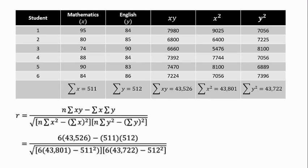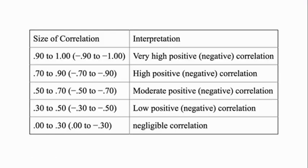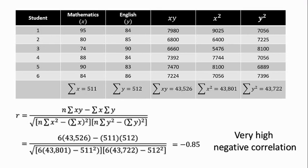We plug in those values into the formula with n equal to 6 because we have 6 students being investigated. You can pause this video to verify how the values were used in the formula. This gives a computed value for R equal to negative 0.85, which according to the table presented, signifies a very high negative correlation.